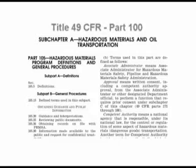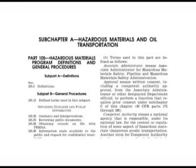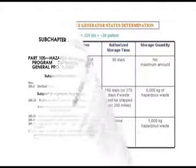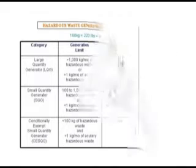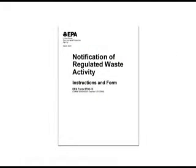The training requirements for both agencies are discussed later in this presentation. By reviewing this first chart, you can determine your generator category as defined by the Environmental Protection Agency: a CESQG, an SQG, or an LQG. It is important to remember that both small quantity and large quantity generators must apply for an EPA identification number using EPA Form 8700-12.